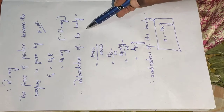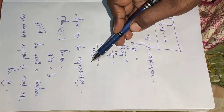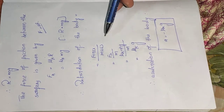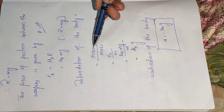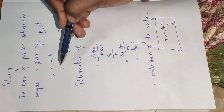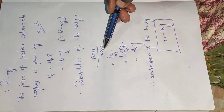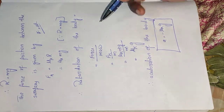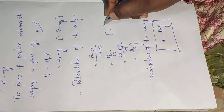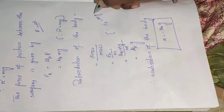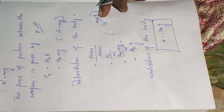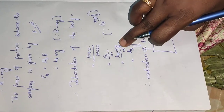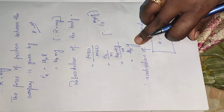This is retardation of the body — decreasing the velocity. What is the formula? Acceleration equals force divided by mass. Force is represented by F suffix K, mass represented by M. So, FK equal to Mu K into MG. The M in the numerator and denominator cancel.